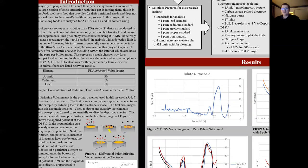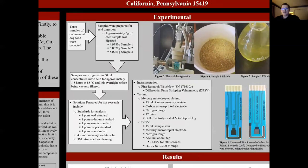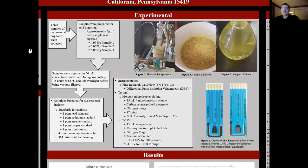Moving on to the experimental section. The experimental section for this research is summed up by this flowchart. Three different samples of commercial dog food were collected and these samples were then prepared for acid digestion. Approximately five grams of each sample was digested. Samples were then digested in 50 milliliters of concentrated nitric acid for approximately one and a half hours at 85 degrees Celsius, and then left overnight to further digest before being vacuum filtered.